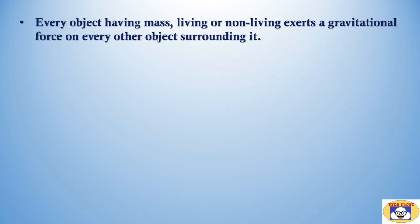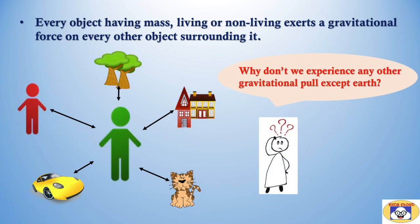Not only the ball, but every object having mass, living or non-living, exerts a gravitational force on every other object surrounding it. So there must be some pull from other objects such as trees, buildings, vehicles, animals, or even other humans. But actually we don't feel any of this force. Why don't we experience any other gravitational pull except earth?